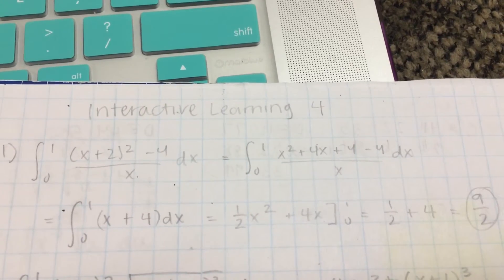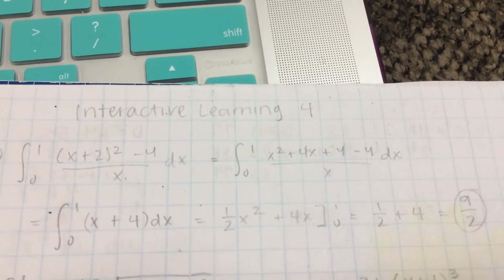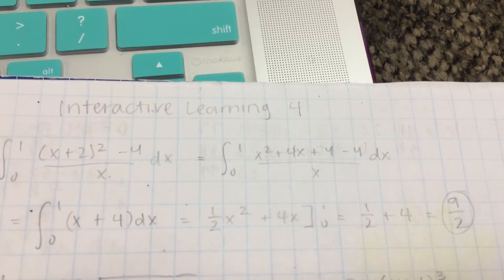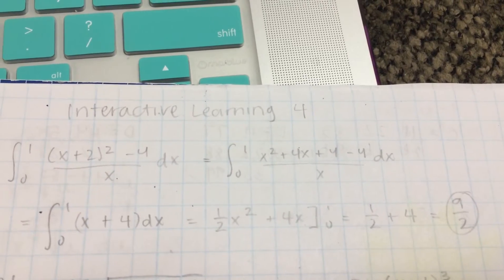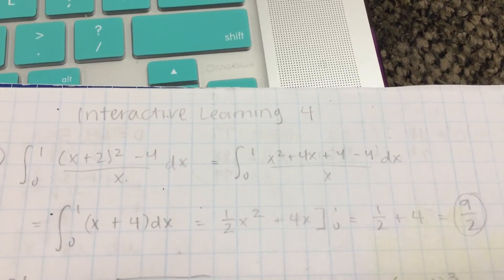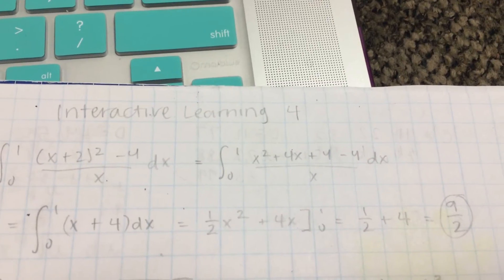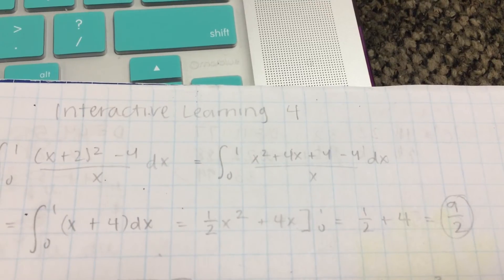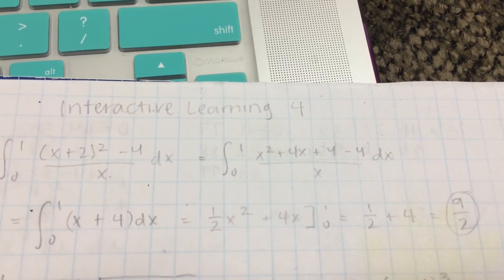Then when you plug in 1, the upper limit, you get 1/2 + 4. And you don't get anything from the bottom limit because the zeros cancel out all the terms, just making it 0. So 1/2 + 4 is 9/2, and that is the answer to this problem.